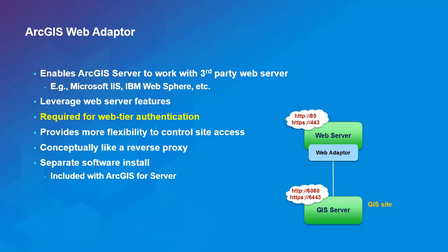The WebAdapter is required for web tier authentication. It's a tool provided at no cost with ArcGIS Server and Portal products that leverages capabilities of a third-party web server like IIS, Tomcat, or any Java application server. It also helps translate ports from the default ports of 6080 and 6443 to 80 and 443. There are other ways to accomplish that, but the WebAdapter is the Esri-provided, fully integrated, easy way to do it.